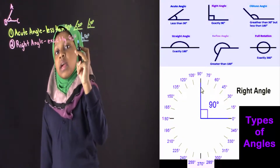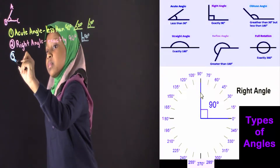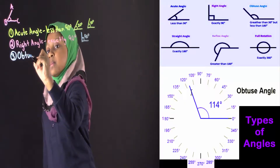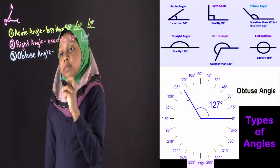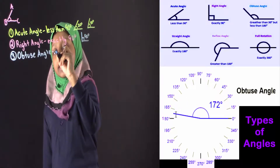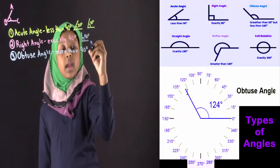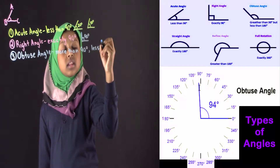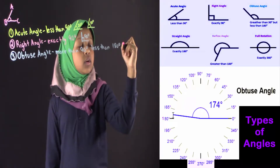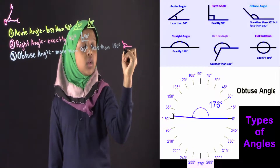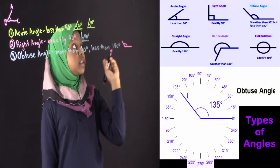If an angle is more than 90 degrees, it's not going to be a right angle. It's going to be an obtuse angle. The meaning of obtuse angle is it's an angle that is more than 90 degrees and less than 180 degrees. Suppose over here I'm drawing an obtuse angle. This is an obtuse angle because this angle is more than 90 degrees and it's less than 180 degrees. So this is called an obtuse angle. We see in our visual figure different types of obtuse angles.